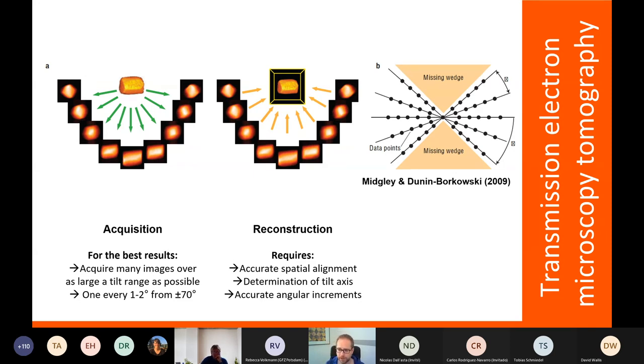So this is TEM tomography where you take a sample, tilt it between different angles, collect the images, and then back reconstruct what this would look like. You can use this to look at small crystals that have crystallized, at nanoporosity, numerous options. People have analyzed dislocations in three dimensions, things that David has been talking about when you deform rocks. You could look at them very carefully in three dimensions.